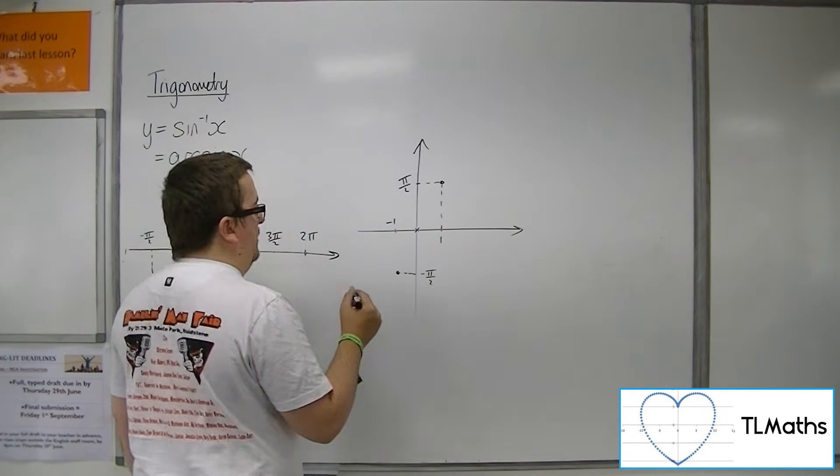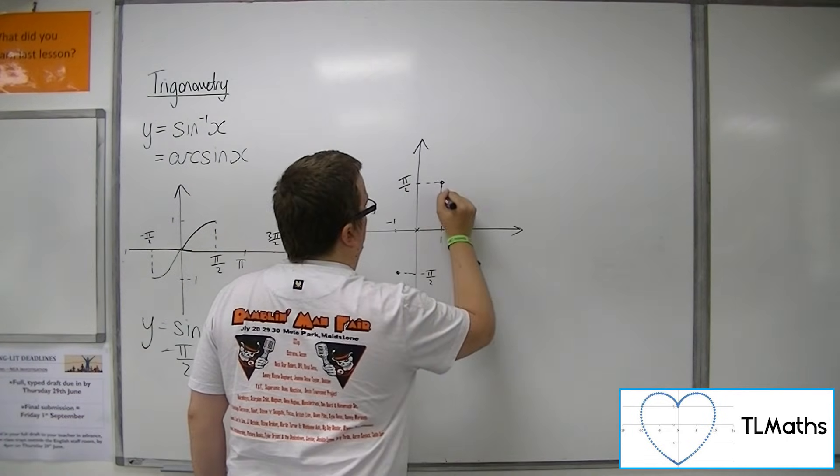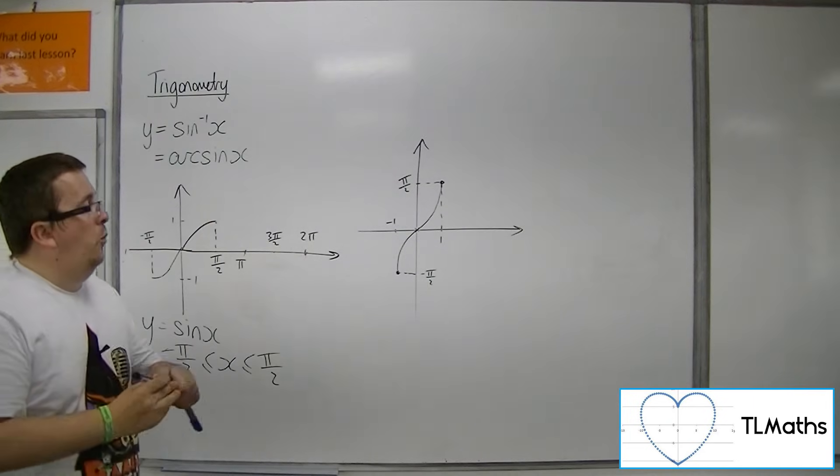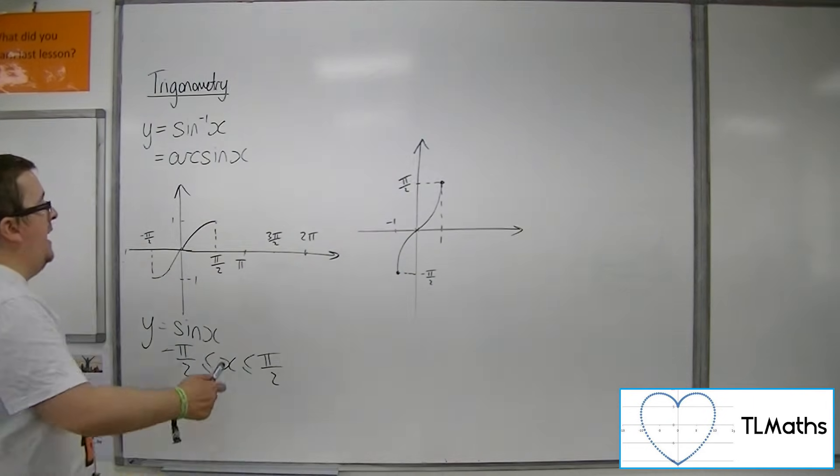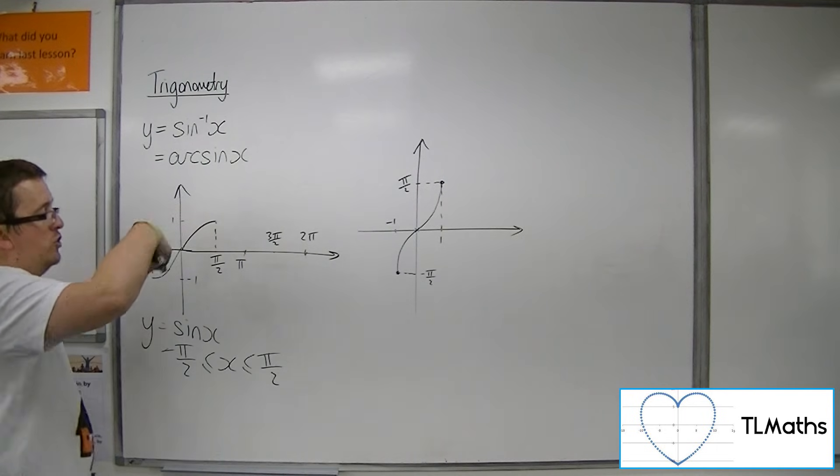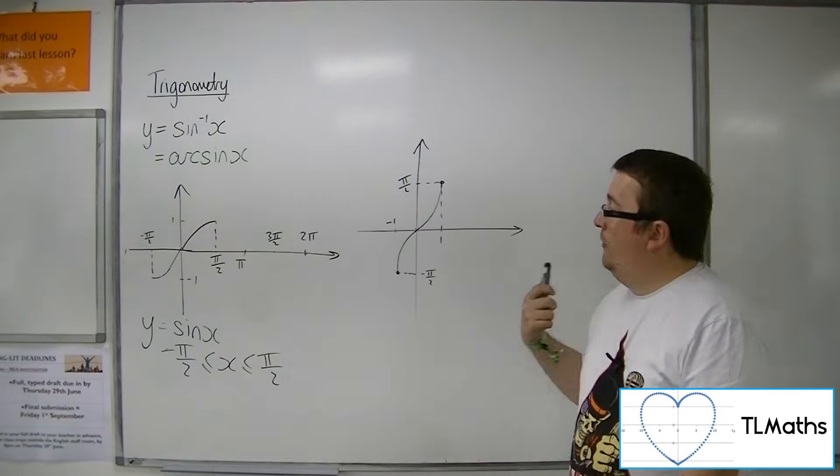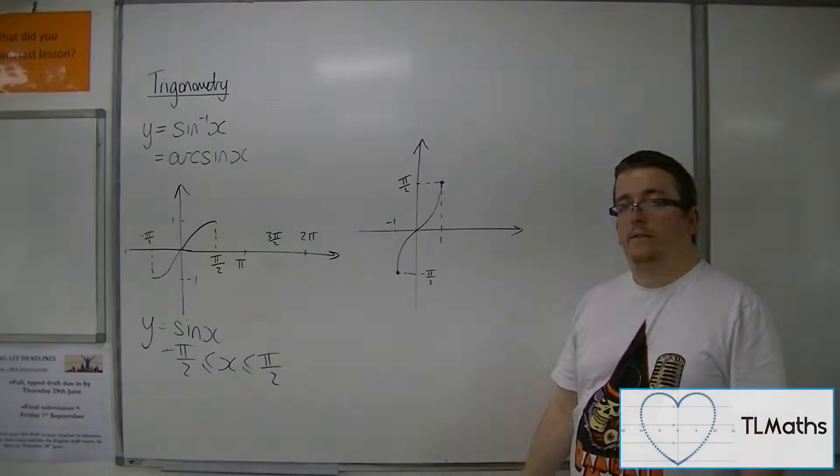And so the curve, instead of looking in that shape, will look like this. And here is the curve of y equals arc sine x. So it comes from the sine curve, restricting the domain to make it 1 to 1, and then reflecting it in the line y equals x. And you get this curve here. Thank you.